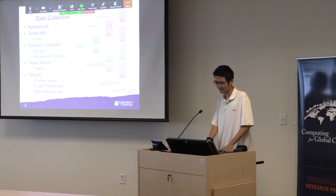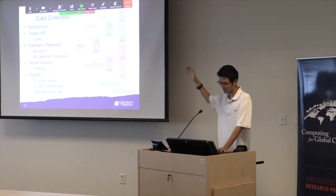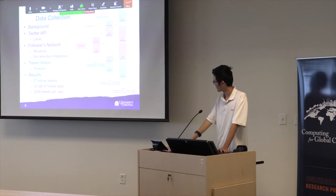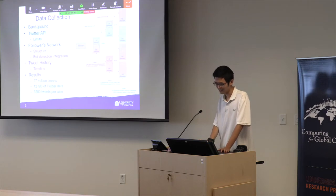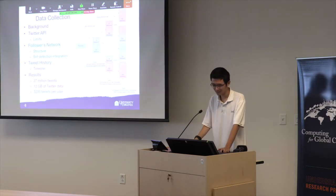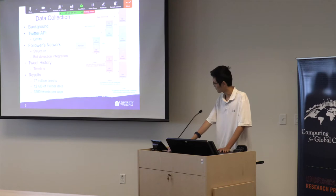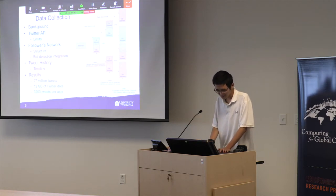After the network is constructed, we look at each user's tweet timeline. The timeline consists of all the user's history — their tweets, retweets, and all their interactions with other users. For the results of the data collection, we collected 20 million tweets, 12 gigabytes of Twitter data, and up to 3,200 tweets per user, which is Twitter's API limit.